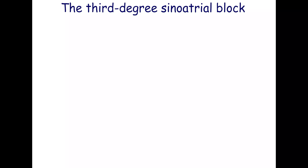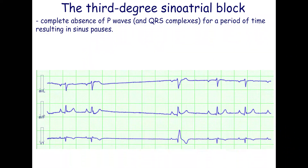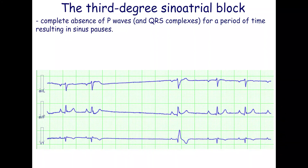The third-degree sinoatrial block is characterized by a complete absence of P-waves for a period of time, resulting in sinus pauses. It is important that the pause is not a multiple of the P-P interval. The third-degree sinoatrial block sometimes causes asystole, which can be lethal.